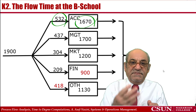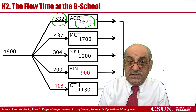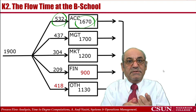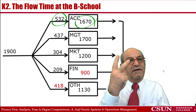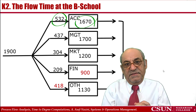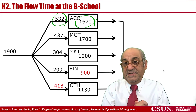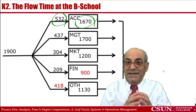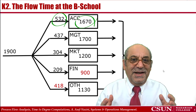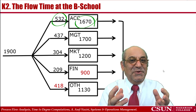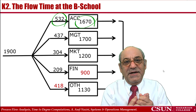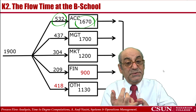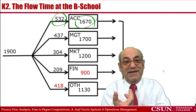Out of the three components of Little's Law — throughput, flow time, and inventory — I have two of them. Finding the third one is straightforward. By the way, in real life, do you know which of these three items is more expensive to compute — throughput, inventory, or flow time — in both service and manufacturing environments?